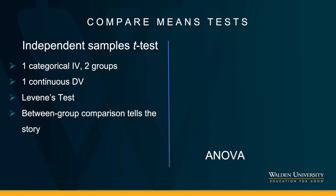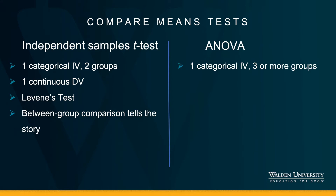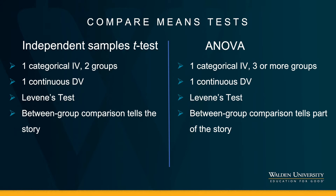The ANOVA test also uses one categorical independent variable, but now I need a variable that has at least three or more groups. The dependent variable is continuous, and I will have to engage with the results of Levene's test to evaluate homogeneity of variances between those three or more levels. When I find significance in the ANOVA results, I'm not quite sure which group comparisons are driving that significance. Any significant results could be generated by differences between group 1 and 2, group 1 and 3, group 2 and 3, or all of the above. So the between-group comparison tells me only part of the story — that is the main difference between the t-test and the ANOVA test.